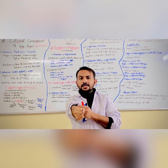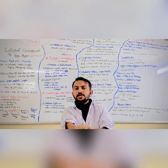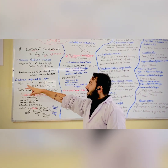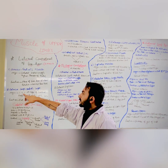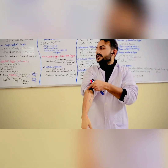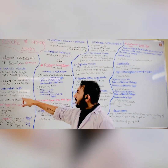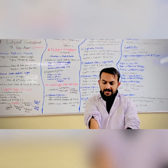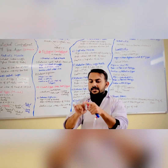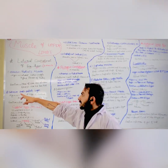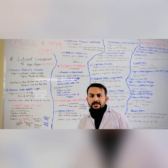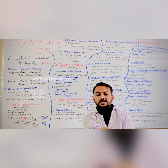The function of the brachioradialis is flexion of the forearm at the elbow and rotation to the mid-point position. This is the strongest position of the forearm. The extensor carpi radialis longus originates from the lateral supracondylar ridge of the humerus, and its insertion is the base of the second metacarpal bone. Its function is extension and abduction of the hand at the wrist joint.